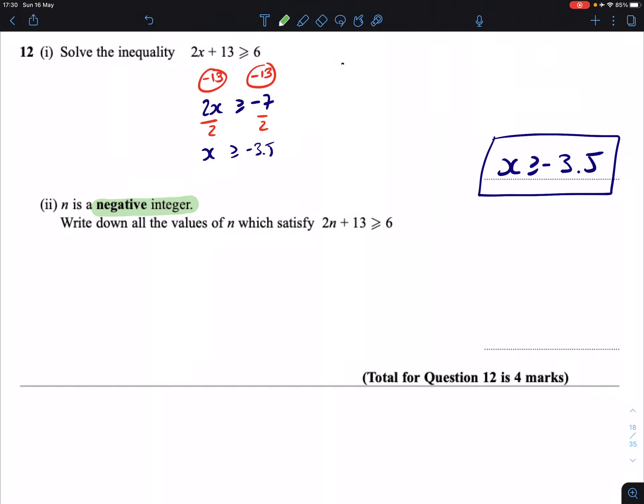The whole number that's just bigger than negative 3.5 is negative 3. Then we have negative 2, then we have negative 1. And that's it. There are no other negative integers after that because it becomes 0, then positive. So minus 3, minus 2, and minus 1 are the values of n which satisfy this equation, which basically means it's what works.